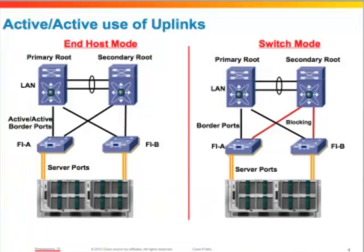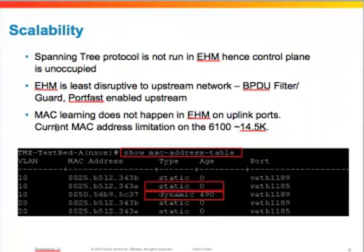The next point covers active-active usage of uplinks. In end host mode all links are forwarding irrespective of the upstream topology, whereas in switch mode only the links towards the primary root are forwarding and the rest are blocking. So end host mode provides maximum bandwidth out of the system without requiring any special upstream topology. From a scalability standpoint, since spanning tree protocol is not run in end host mode, the control plane is completely unoccupied — the CPU on the fabric interconnects doesn't have to process BPDUs.